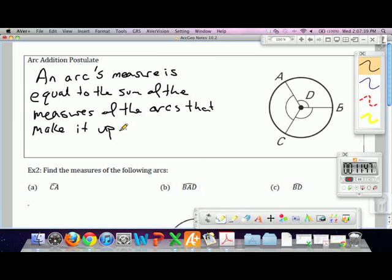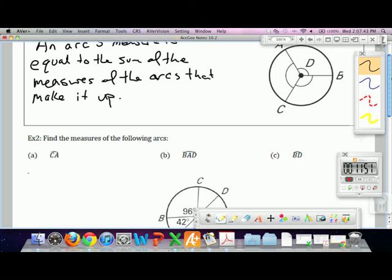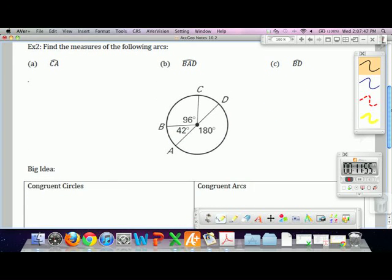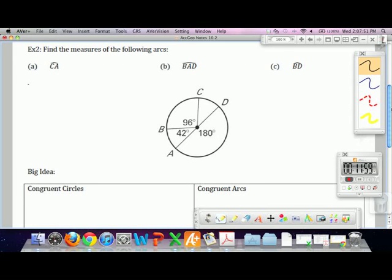For example, if I wanted to find what the measure of major arc ACB is, that should be equal to the sum of arc AC plus arc CB. This big arc here is equal to these smaller parts. That's all the arc addition postulate says. Because we're allowed to add the pieces together to get the whole thing. Find the measures of the following arcs. I want to find the measure of arc CA. Well, I can use the arc addition postulate to just add the smaller pieces and get the big arc here. So arc CA should be 96 plus 42, which is 138 degrees. Major arc BAD is 222. And arc BD starts at B, goes directly to D.